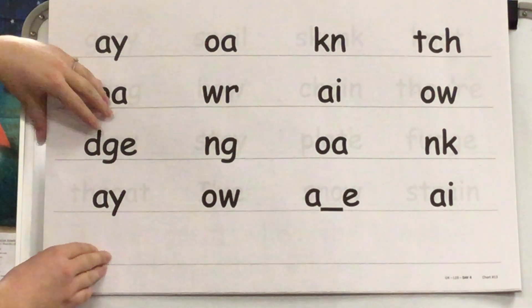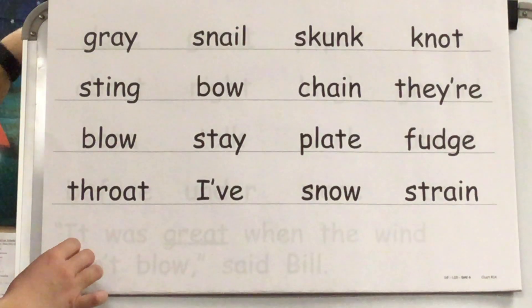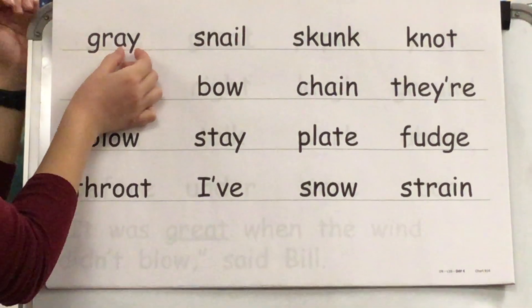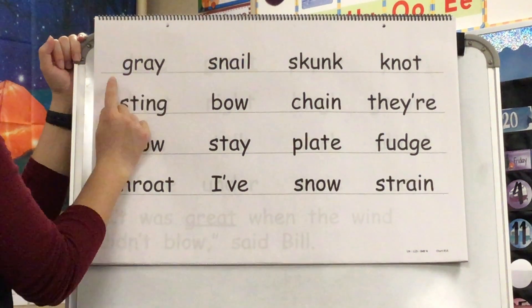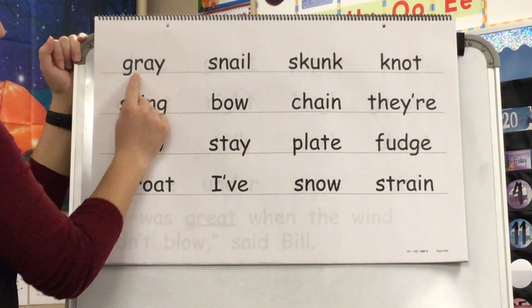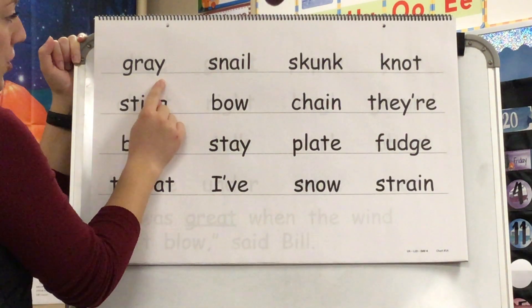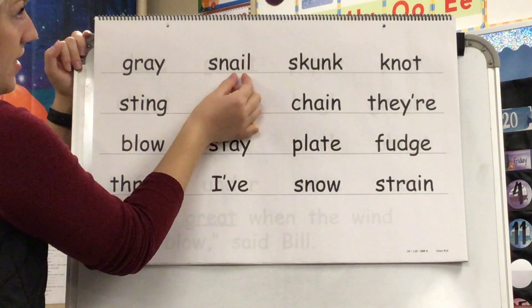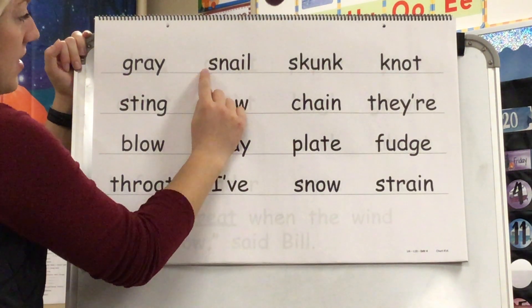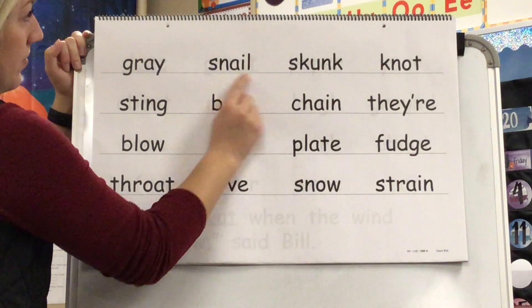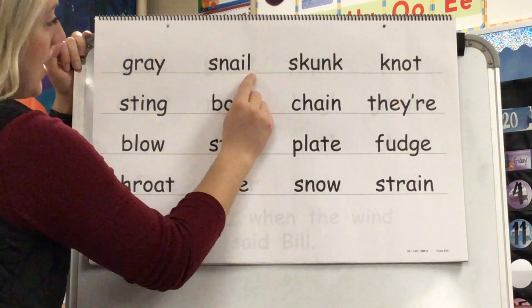Time to put our sounds into words. Sound? A. Blend? Gr-ay. Word? Gray. Yes, gray. Sound? A. Blend? Snail. Word? Snail. Yes, snail.